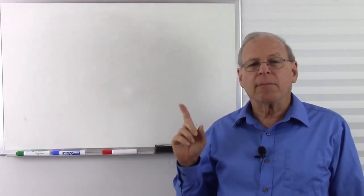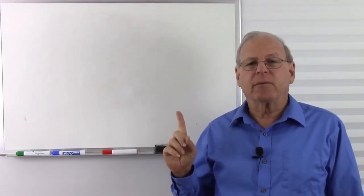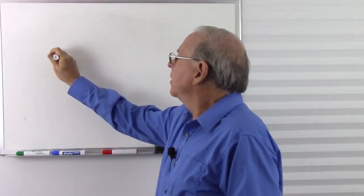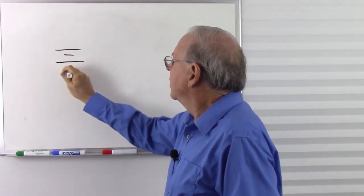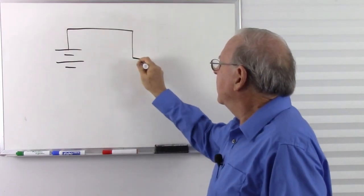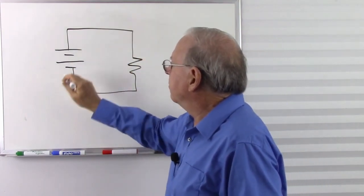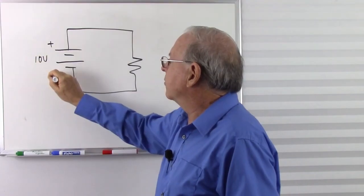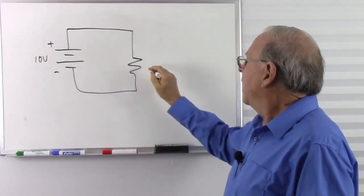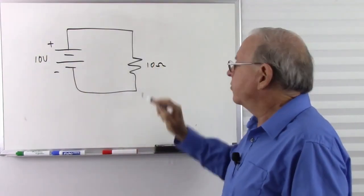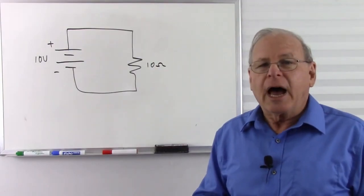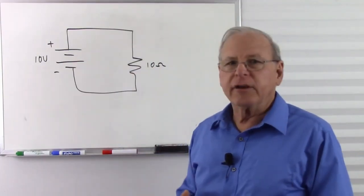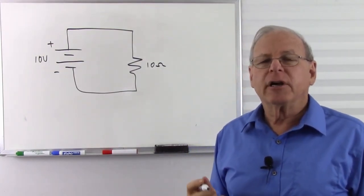But I'm going to show you a problem with that particular way of thinking. Let's take a look at a circuit and see what we're talking about here. Here's a battery and a resistor making a complete circuit. Let's make this 10 volts, label it positive and negative for clarity, and let's make this a 10 ohm resistor. So how much current do we have flowing in the circuit? It's 10 volts divided by 10 ohms, so we have 1 amp of current.